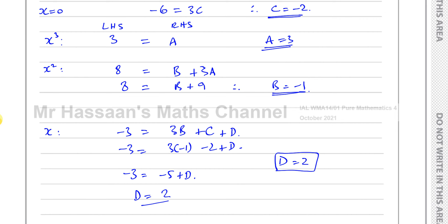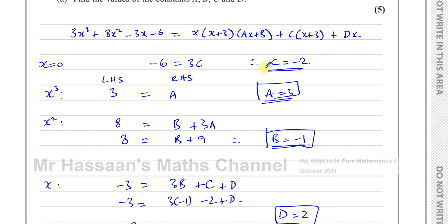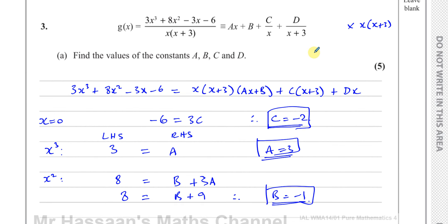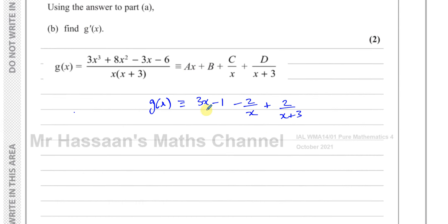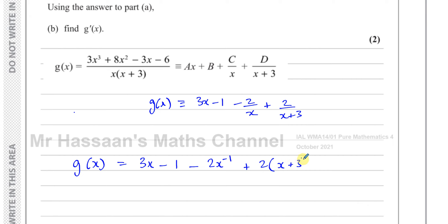So we've found all the values: a equals three, b equals negative one, c equals negative two, and d equals two. For part b, the curve has equation y equals g of x where x is greater than zero. Using the answer to part a, we need to find g dash of x — the derivative of g. We write g of x in a form we can differentiate: three x minus one minus two times x to the power of minus one plus two times x plus three to the power of minus one.